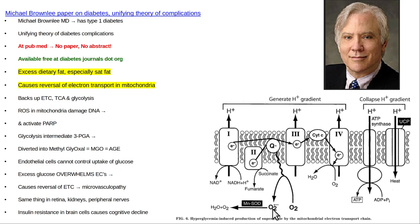Then you can get DNA damage in the mitochondria and in the nucleus, and you'll activate something called PARP — polyadenosine protein for DNA repair. That actually goes to the glycolysis cycle in the cytoplasm and will inhibit 3-phosphoglyceraldehyde dehydrogenase, and that will divert 3-PGA into MGO — methylglyoxal.